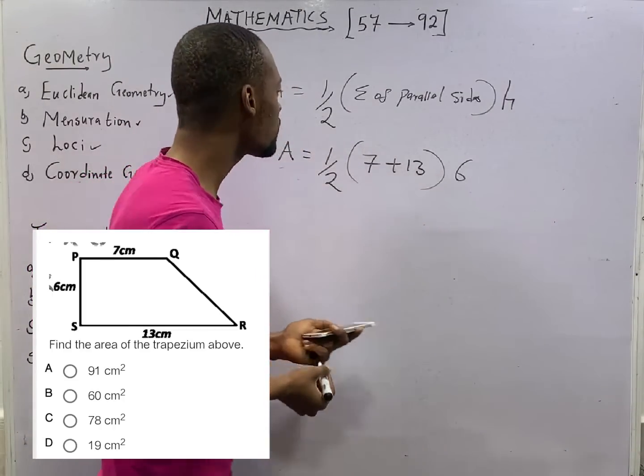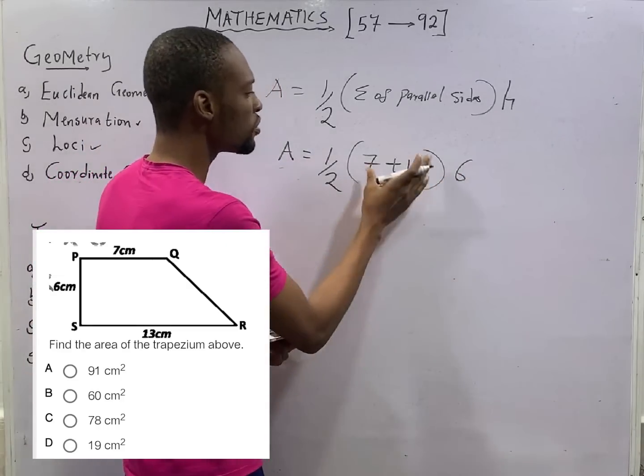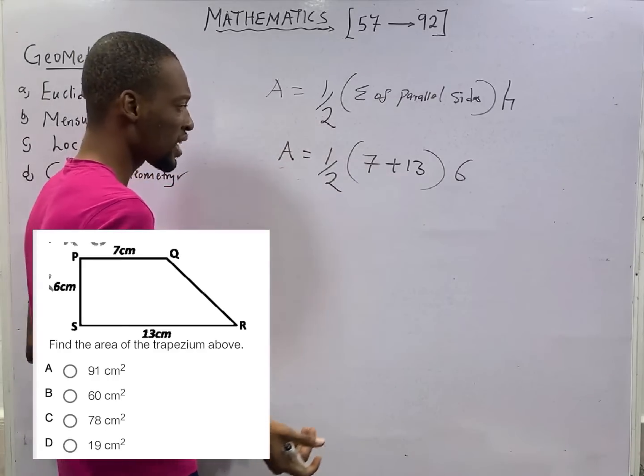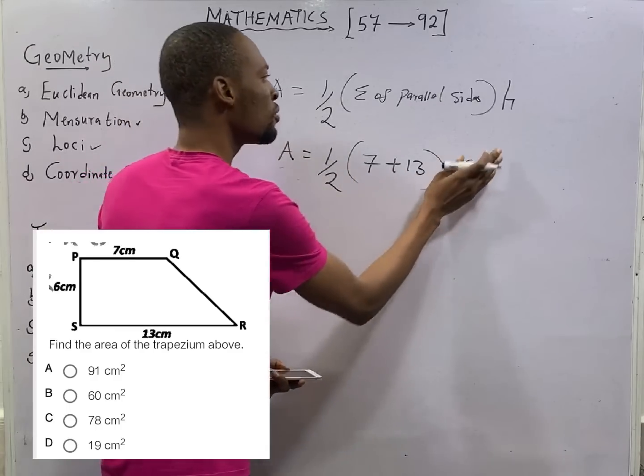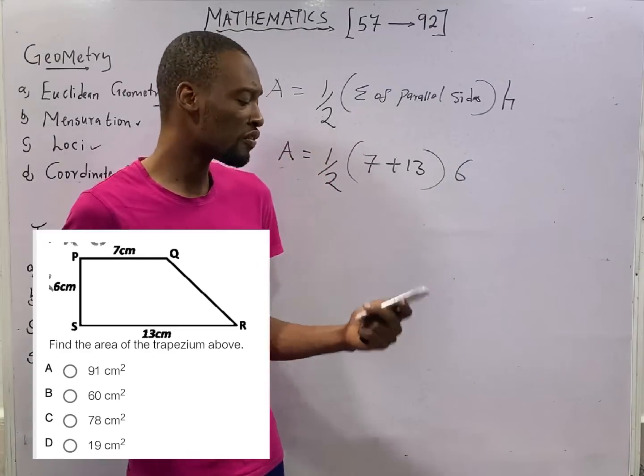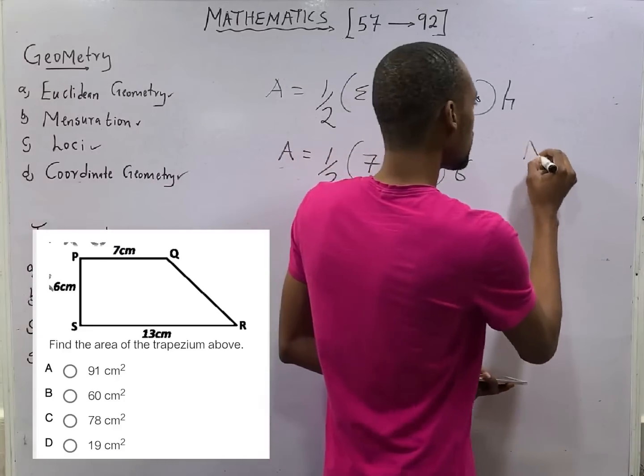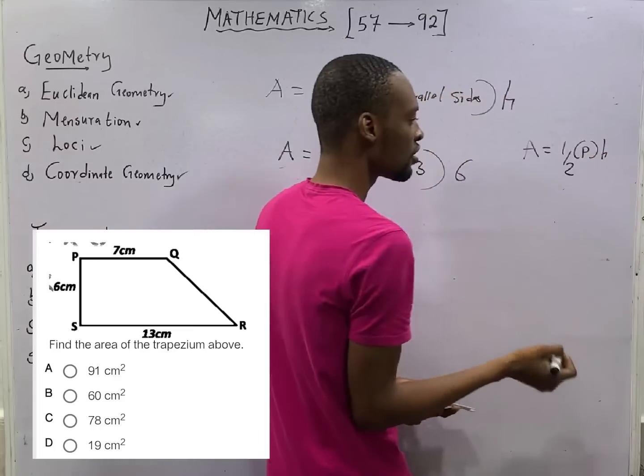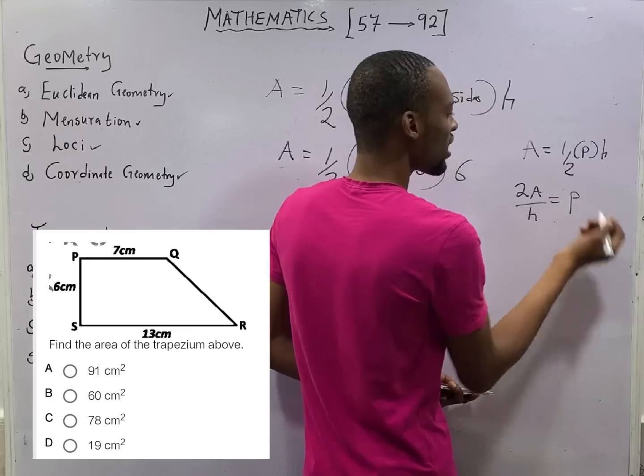That is basically how to find the area of trapezium. In some cases, you'll be given the area, you'll be given the height and you'll be asked to look for sum of the parallel sides. It should be something easy for you. In some cases, you'll be given the parallel sides, the area, and you'll not be given the height. Any one you are not given, make it subject of the formula. If you are not given parallel side, you simply say A equals half. You can call the parallel side P times H. Two times area over H equals your parallel side.